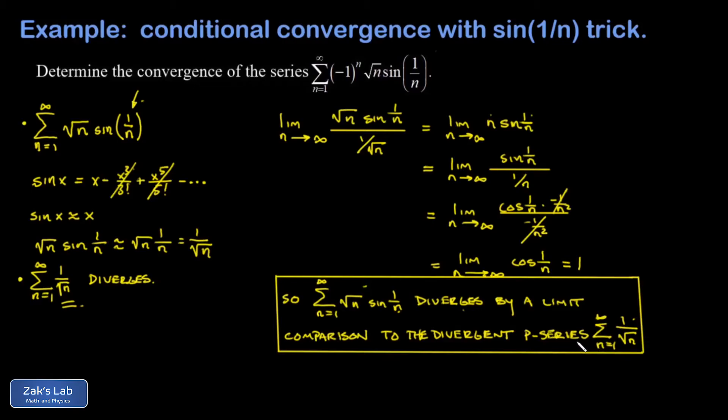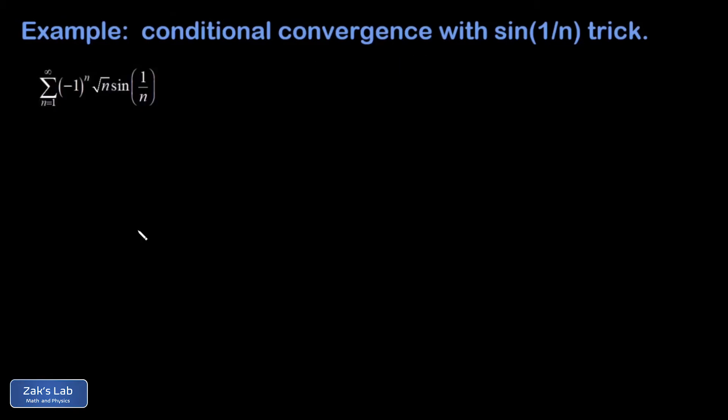So we don't have absolute convergence, and then we have to go into the alternating series test. To show that this original alternating series converges, we have to prove two things. First, we need to show that the large n limit of the terms in this series is 0, where that a_n stands for the absolute value part of the series. Next, we have to show that for n greater than some minimum value, the terms are decreasing. And in practice, number 1 is always the easy part.